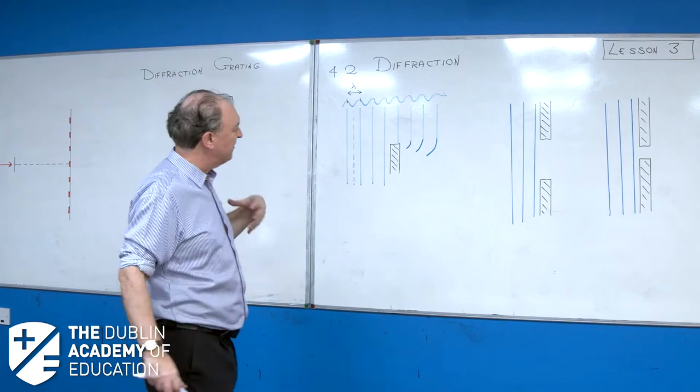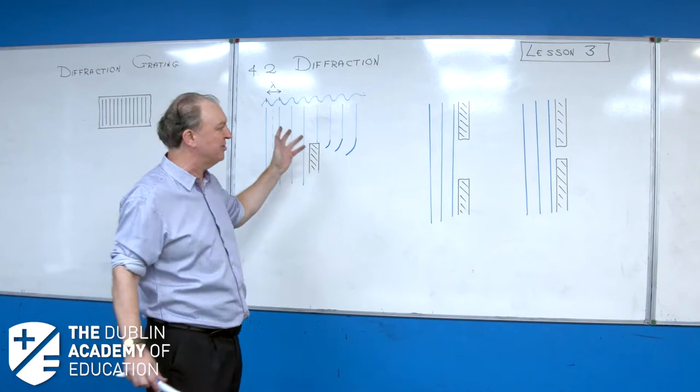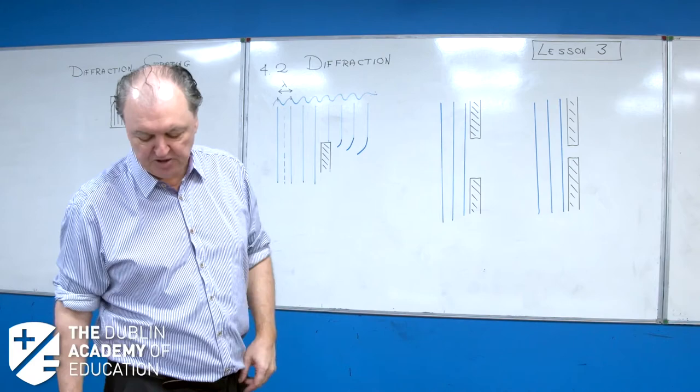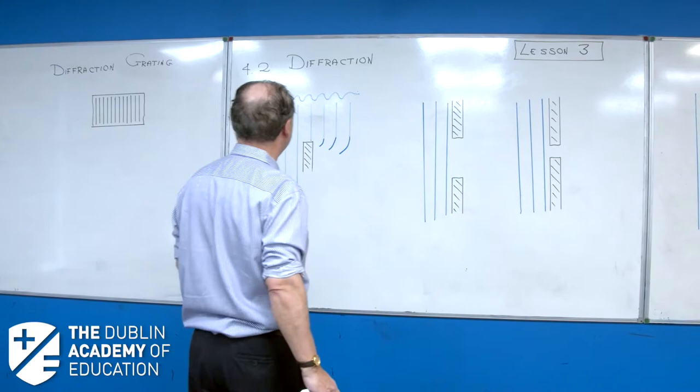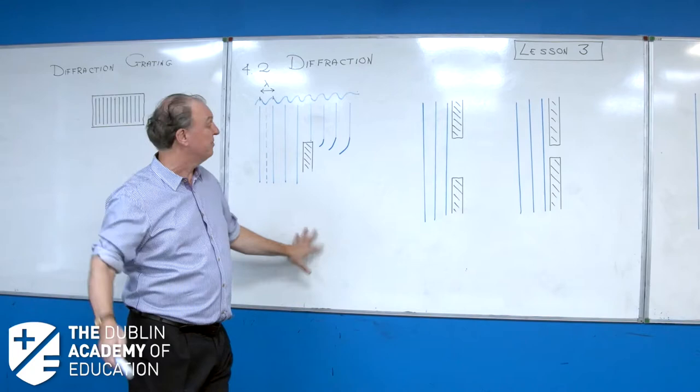Diffraction is about waves spreading around corners or through gaps — that's an important definition. You can see that at the top of page 46. Diffraction is a spreading of waves around corners. For example, sound diffracts because you can hear around corners.